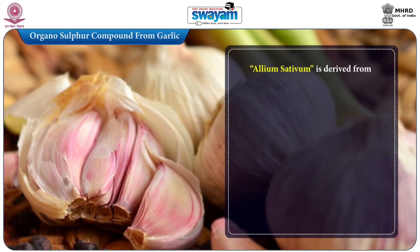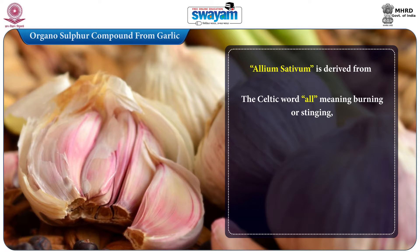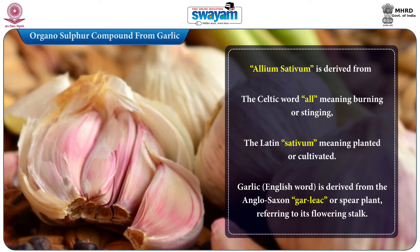The name Allium sativum is derived from the Celtic word 'all' meaning burning or stinging, and the Latin 'sativum' meaning planted or cultivated. The English word garlic is derived from the Anglo-Saxon 'garlic' or spear plant, referring to its flowering stock.